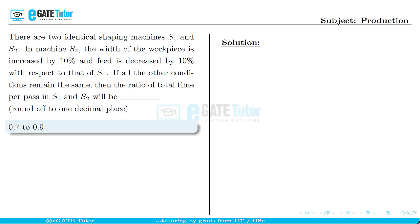This question is from production. There are two identical shaping machines S1 and S2. In machine S2, the width of the workpiece is increased by 10% and feed is decreased by 10% with respect to that of S1. If all the other conditions remain the same, then the ratio of total time per pass in S1 and S2 will be... For this numerical answer type question, we need to round off the answer to one decimal place. The accepted answer range for this question is 0.7 to 0.9. Let's move on to the detailed solution.